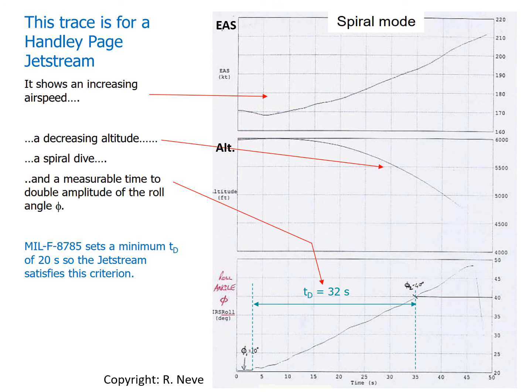Even if it's slightly unstable for the spiral mode, there's no problem. The regulation requires a minimum time to double amplitude is 20 seconds. For the Jetstream, this aircraft is 32 seconds, so it's larger than the minimum Td of 20 seconds, and this aircraft can be certified.